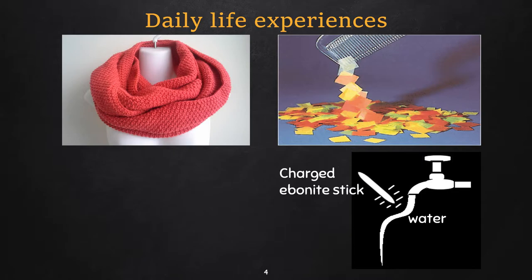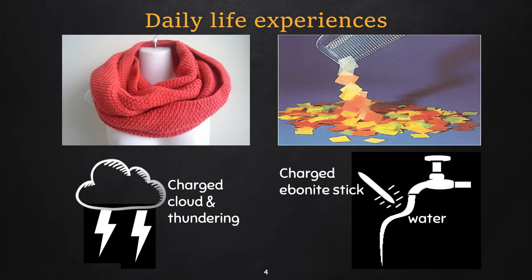Take an ebonite stick, rub it with fur, and then hold it near a flow of water, and it will be seen that the flow of water will bend towards the stick. Now at last but not least, see a natural phenomena that is thundering and lightning. Thundering is caused by huge amount of charge in cloud relatively near to the ground, and lightning rods are seen to be attached in tall buildings for protection from thundering. And the idea of lightning rod was also invented by Franklin.